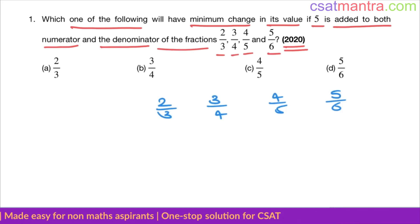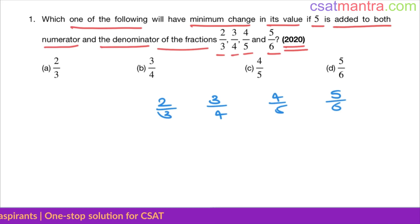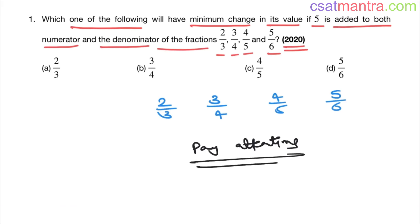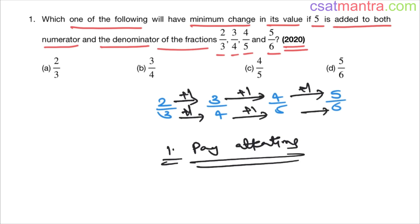Pay attention to the given fractions — this is very important. They are not just random numbers; there will always be a pattern. Notice: 2→3 (+1), 3→4 (+1), 4→5 (+1), 5→6 (+1). Also, the difference between numerator and denominator in each fraction is always 1. You must observe this pattern.